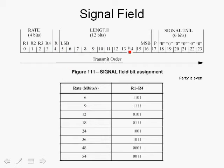There is one bit for the parity bit, and six zeros for the tail bits to drive the convolutional encoder's shift register to the zero state. Even parity is used to check for errors. If the receiver receives a signal field which does not have even parity, then it must discard that packet.